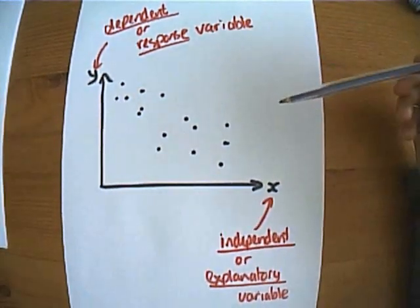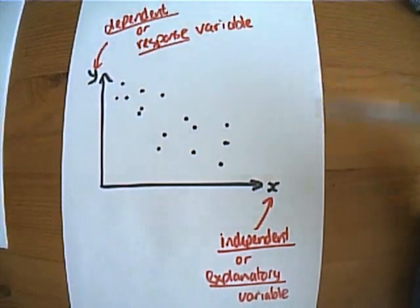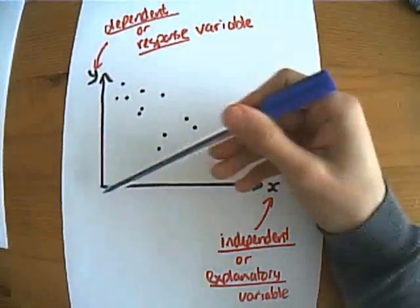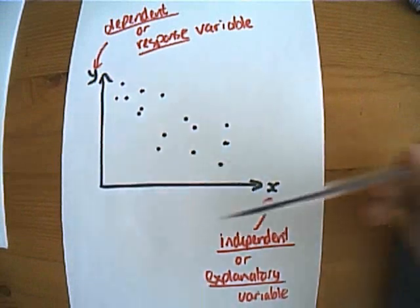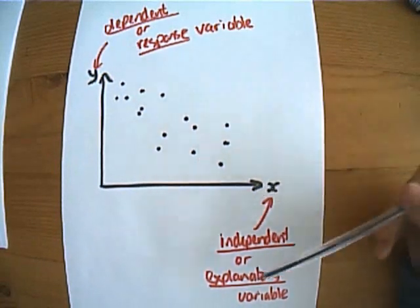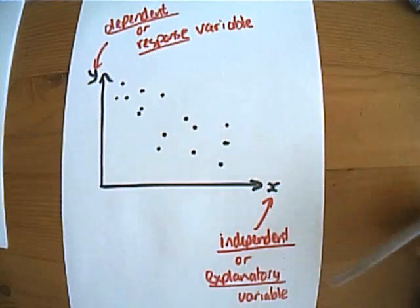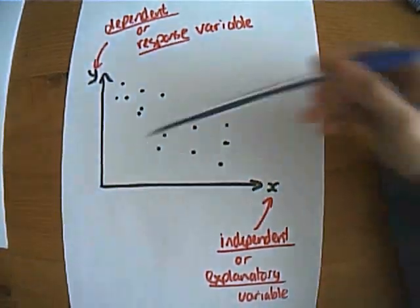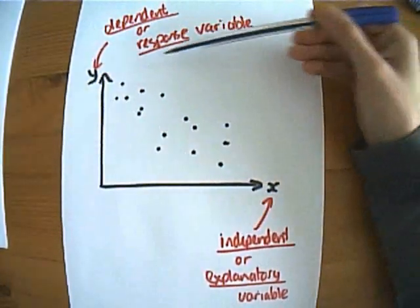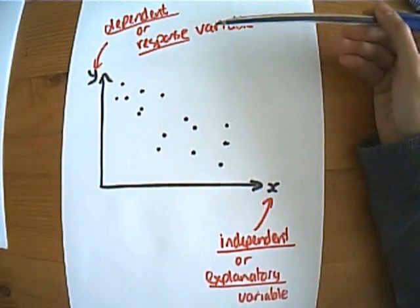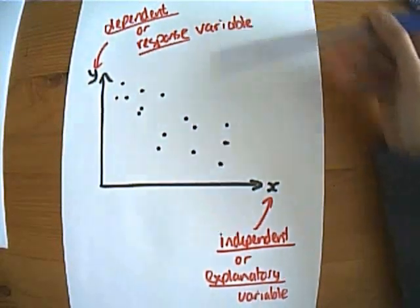But we do also use two other names for these variables at this point. When we're talking about regression, often we call the value that is independent, that we're varying to see what happens, we call it the explanatory variable because it should explain what is going on. The y value, we call the response variable because presumably it's responding to what we're changing.